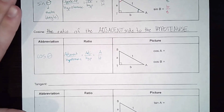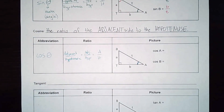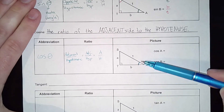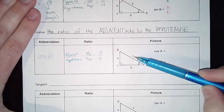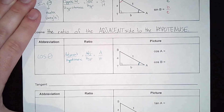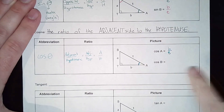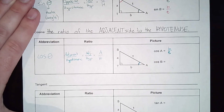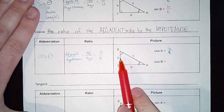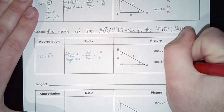Looking at angle A for cosine: adjacent means next to the angle. I have two sides next to angle A — sides B and T — but T is already the hypotenuse because it's across from the 90 degrees, and that does not change. So only B is the adjacent. Cosine of A equals B over T. For angle B, T is still the hypotenuse, so A is the adjacent, giving cosine of B as A over T.